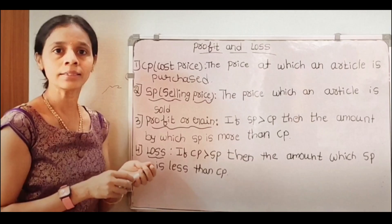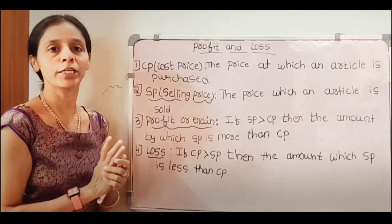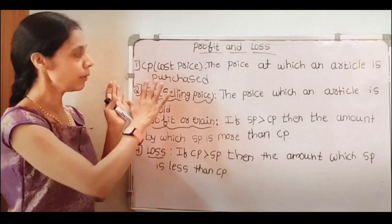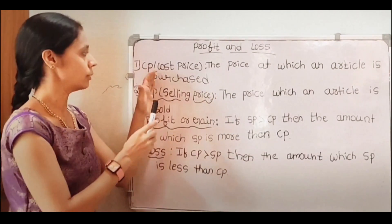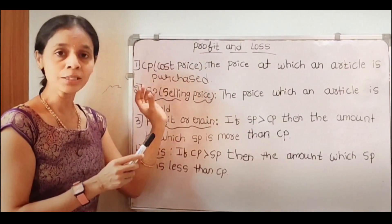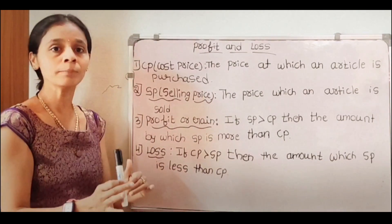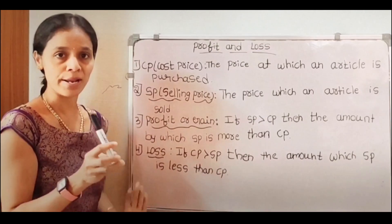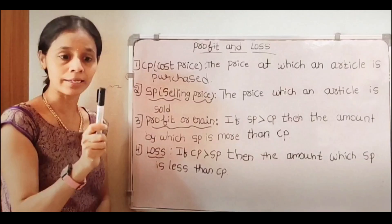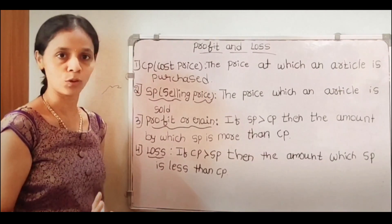CP and SP are two terms we should know when we find out profit and loss. CP means cost price. Cost price means the price at which an article is purchased — the original price of any article. For example, this marker here has an original price of 10 rupees; that is what we call CP, or cost price.